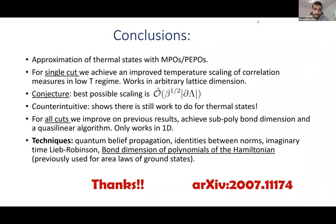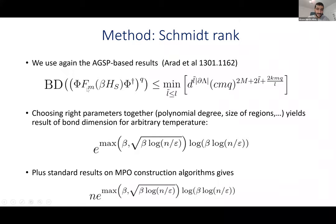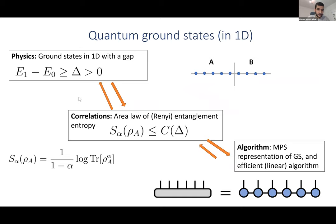Thanks for listening. In the Q&A: a question from the chat asks for the definition of Rényi entropy. The Rényi entropy S_α is defined as: (1/(1−α)) log Tr(ρ^α). For α → 1, this recovers the von Neumann entropy, though that limit is not obvious from the formula — you have to take a limit.